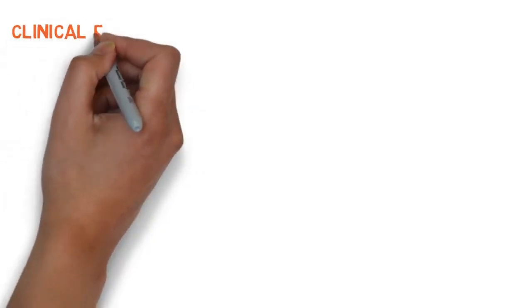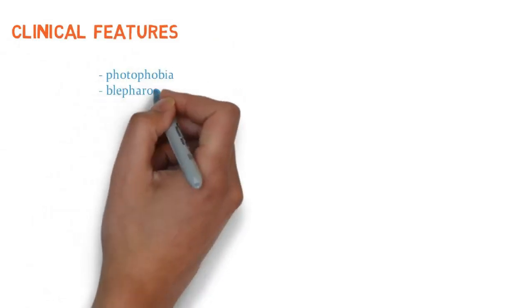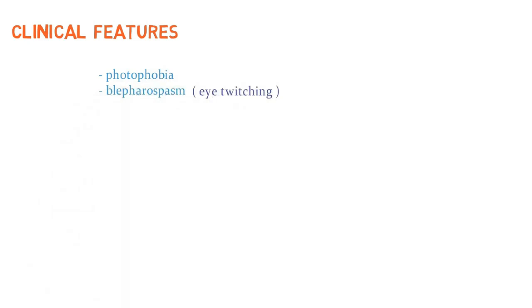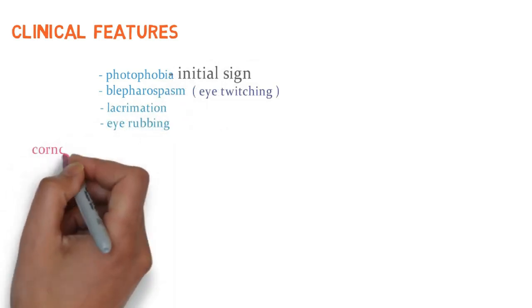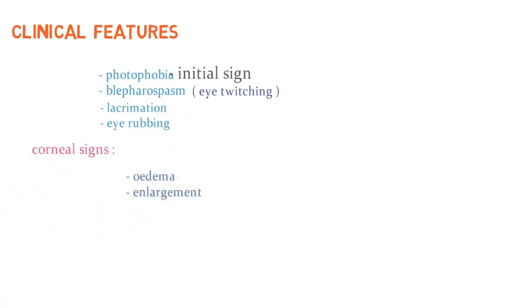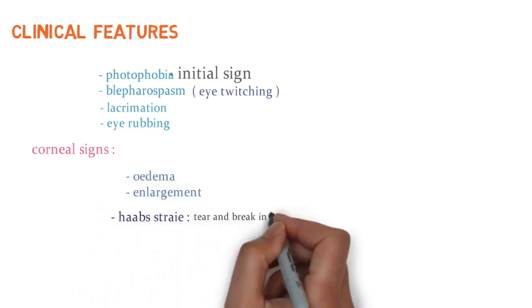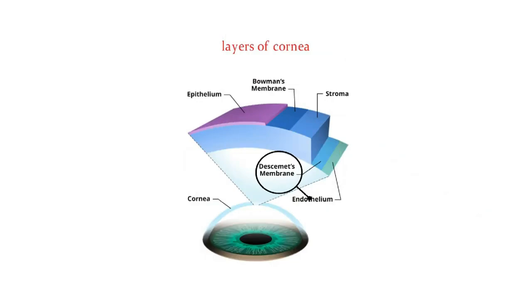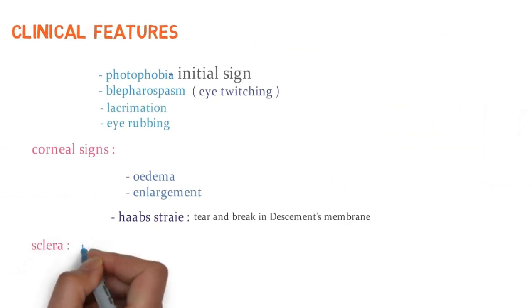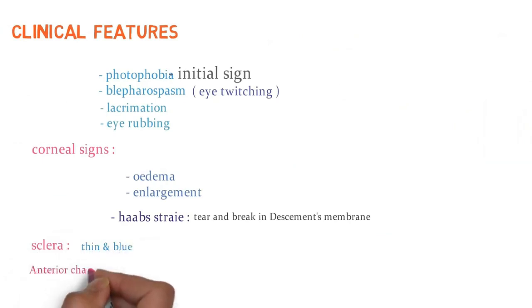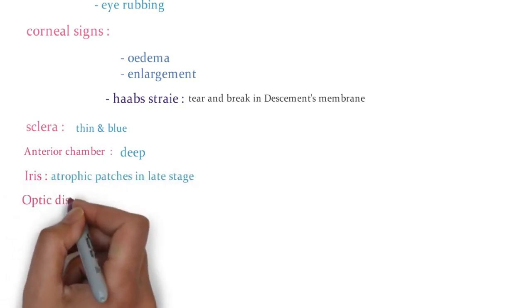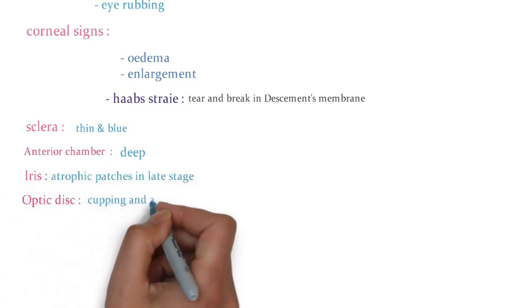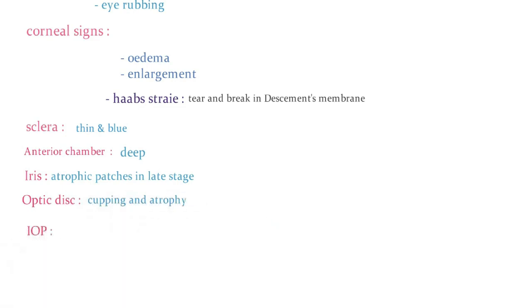The clinical features of congenital glaucoma include photophobia and blepharospasm, which generally occur in the initial stages, along with lacrimation and eye rubbing. Corneal signs include corneal edema, enlargement, Haab's striae, and tears and breaks in Descemet's membrane — a dense, relatively transparent, cell-free matrix layer of the cornea. The sclera can be thin and blue. There may be a deep anterior chamber. In the iris, atrophic patches appear in later stages. In the optic disc there is cupping and atrophy, and intraocular pressure is obviously raised.